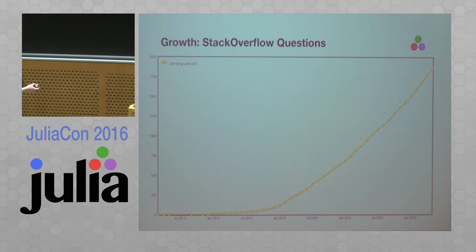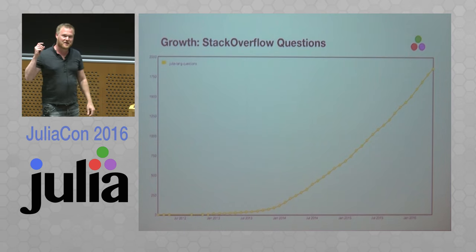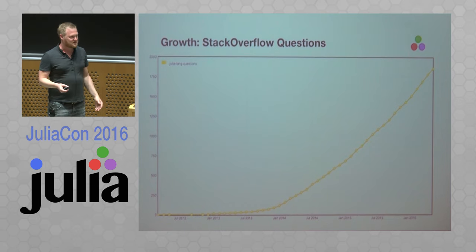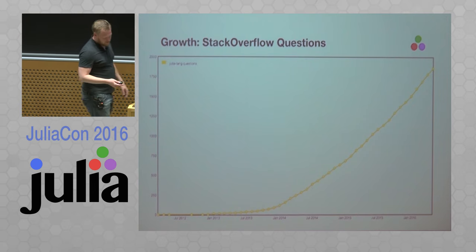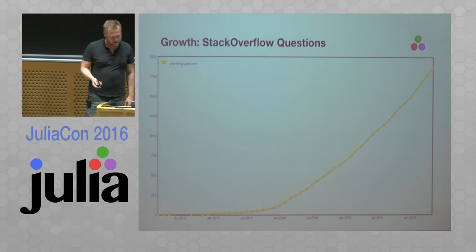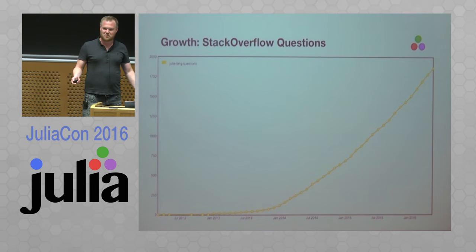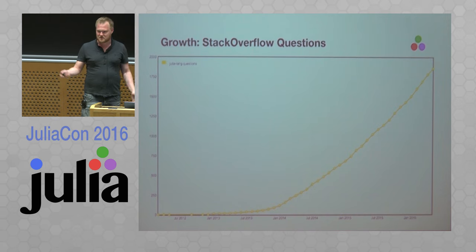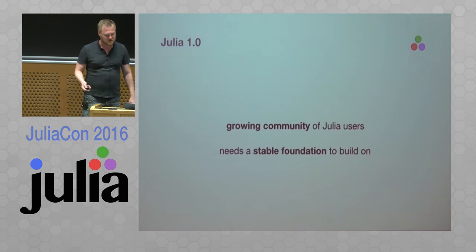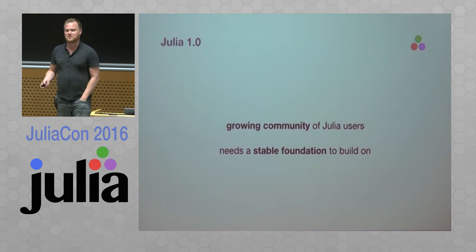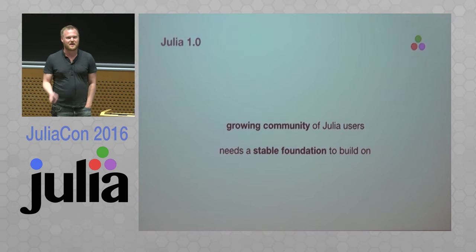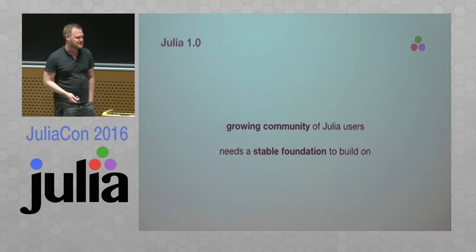The hockey stick was apparently January 2014 — I had no idea at the time. Now there are about half a dozen Stack Overflow questions on a given day. Given this huge amount of growth, it's increasingly urgent and important to everybody using Julia that we have a stable foundation for people to program against and to build their applications and libraries against.